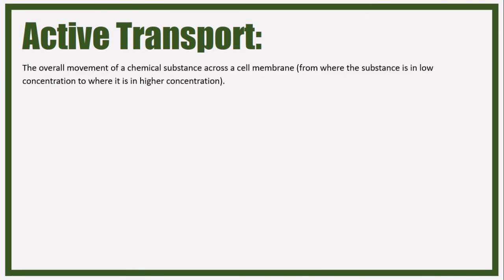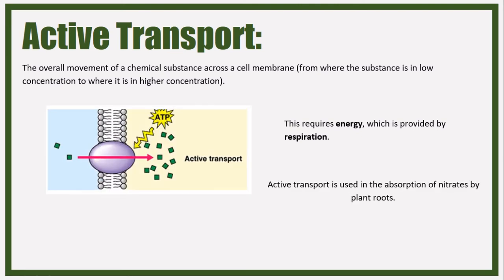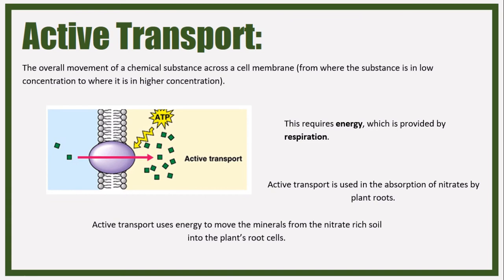Active transport is the overall movement of a chemical substance across a cell membrane from where the substance is in low concentration to where it is in higher concentration - basically the opposite of diffusion. This requires energy, which is provided by respiration (ATP). Active transport is used in the absorption of nitrates by plant roots. For example, the soil around the plant's roots is rich in nitrates whereas the roots themselves are not, so they use active transport to move these nitrates into the plant.